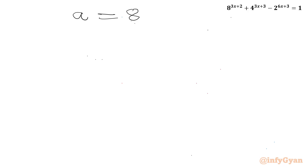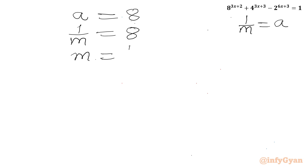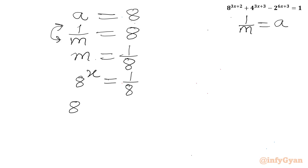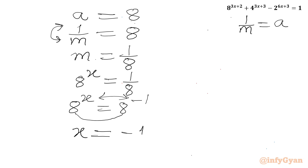Since a = 8 and a = 1/m, we get 1/m = 8, so m = 1/8. Since m = 8^x, we write 8^x = 1/8 = 8^(-1). The bases are the same, so comparing exponents gives x = -1, the only real solution for the given equation.